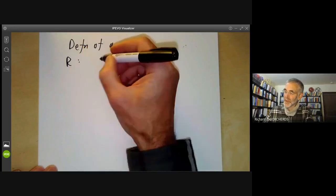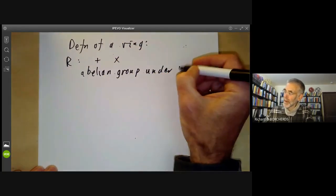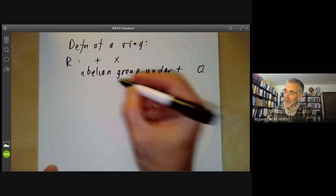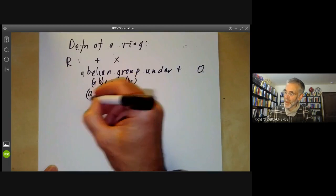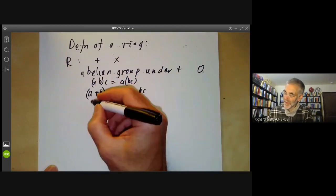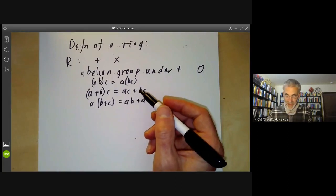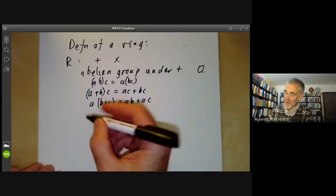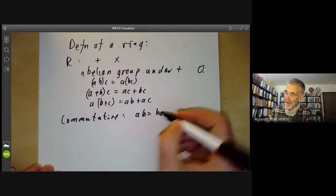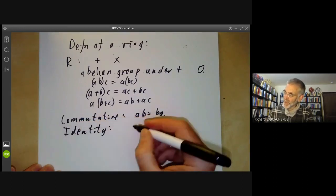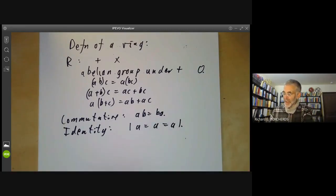So if you've got a ring R, it's got two operations, addition and multiplication. It's an abelian group under addition with an identity element zero, and under multiplication it's associative: (ab)c equals a(bc). It's distributive on the left and the right: a(b+c) equals ab plus ac. Everybody agrees on these conditions, but people disagree on two further properties: whether the ring is commutative (ab equals ba), and whether or not it has an identity — an element one with 1·a = a = a·1.